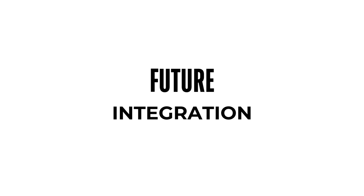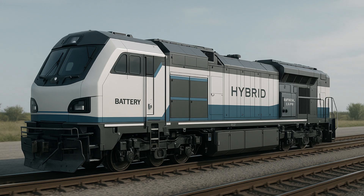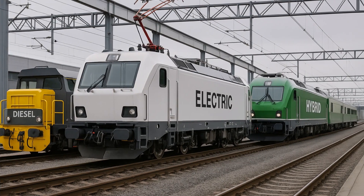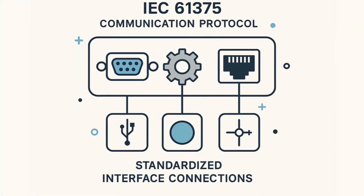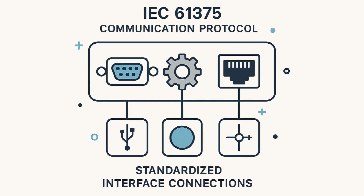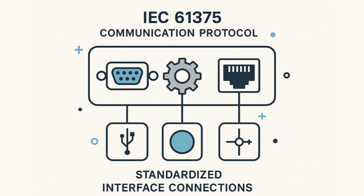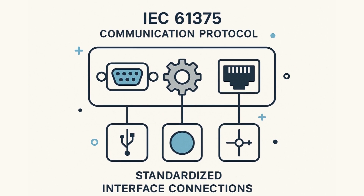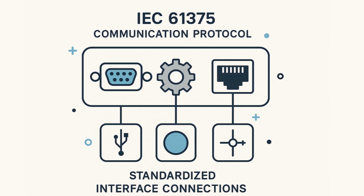As the industry transitions toward hybrid and battery-electric locomotives, MU operation faces new technical challenges. Power management systems must coordinate between diesel generators, battery storage, and potentially overhead catenary or third rail power sources. Standardized communication protocols like IEC 61375 are being adapted for railway applications to ensure interoperability between different locomotive technologies and manufacturers.